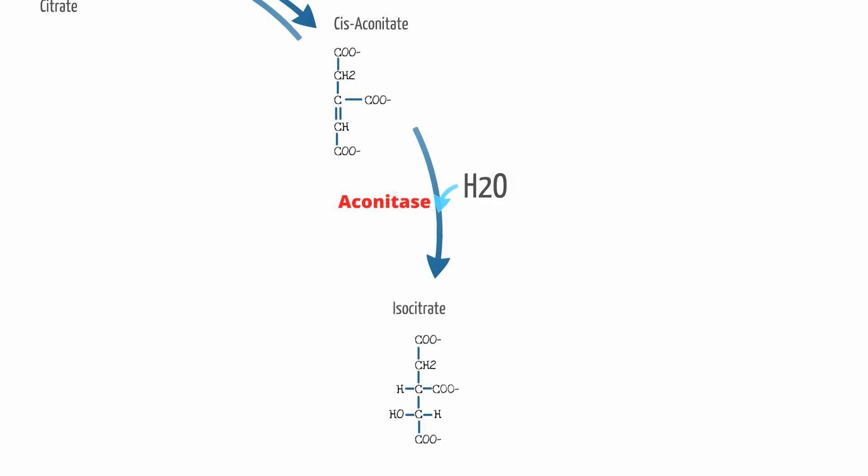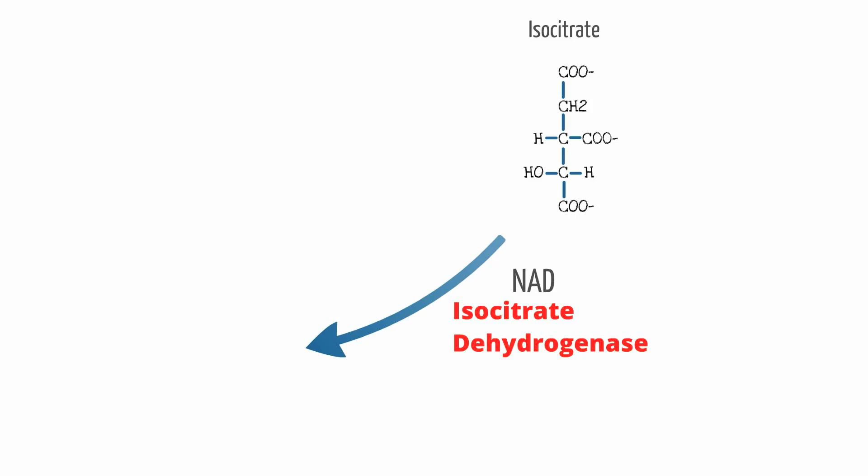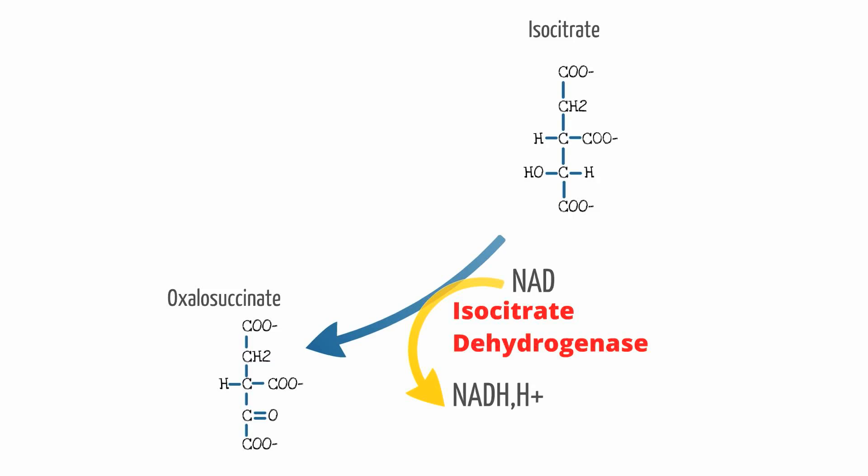The next step is another two-step reaction in one, where isocitrate gets converted to alpha-ketoglutarate. First, isocitrate is acted on by isocitrate dehydrogenase to form oxalosuccinate. Remember, dehydrogenase enzymes always involve removal of hydrogens. During this process, NAD picks up two hydrogen atoms. This step is completely irreversible and is one of the rate-limiting steps of the TCA cycle. This step also produces the first carbon dioxide of the cycle.